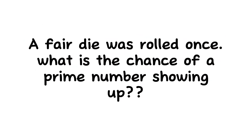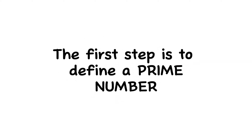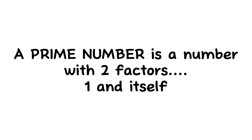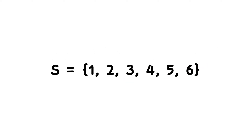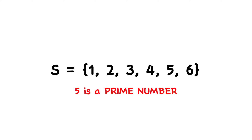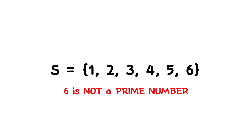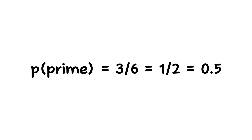That means if you roll a fair die just once, the chance of an even number showing up is 50%. Now I'll ask a second question — pause the video, write it down, and tell me your answer in the comment section. If the die is rolled just once, what is the chance that a prime number is going to show up? A prime number is a number that has exactly two factors: 1 and itself. In our sample space, the prime numbers are 2, 3, and 5. So the probability of getting a prime number is 3/6, which also equals 50% or 1/2. Note: 1 is not a prime number.